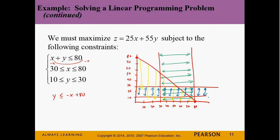We're looking at the area constrained by all of these inequalities — that's why they're called constraints. The feasible region has four vertices. We know one point is (30, 10), and another is (30, 30).